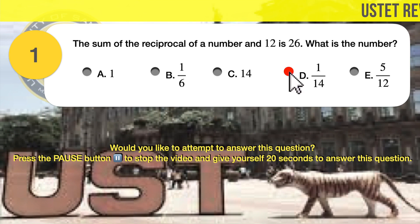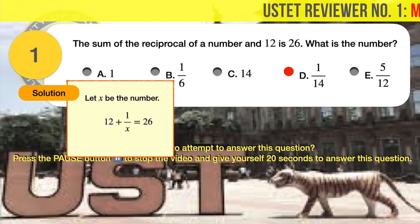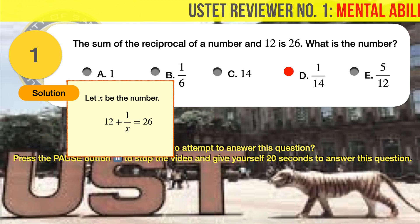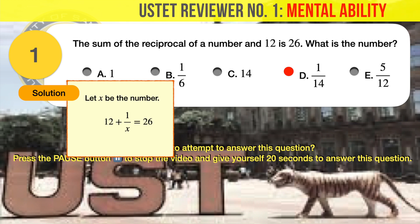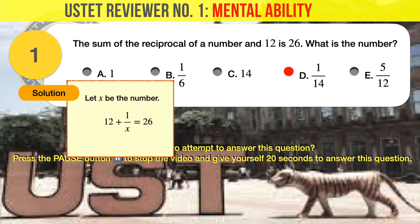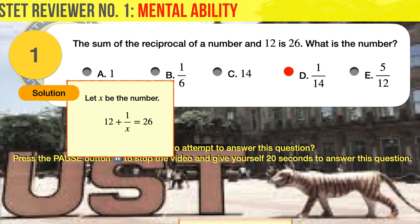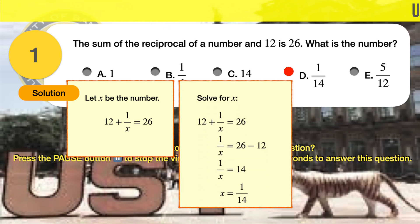The correct answer is D, 1 over 14. Let X equal the number. The sum of the reciprocal of a number and 12 is 26. We write this in equation form as 12 plus 1 over X equals 26. Now we can solve for X. We should arrive at 1 over 14 as the answer.